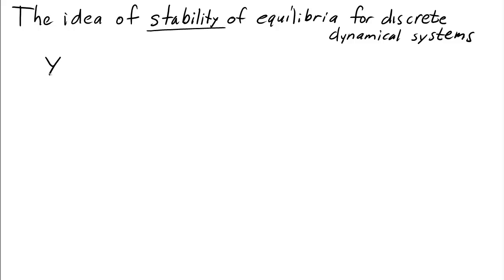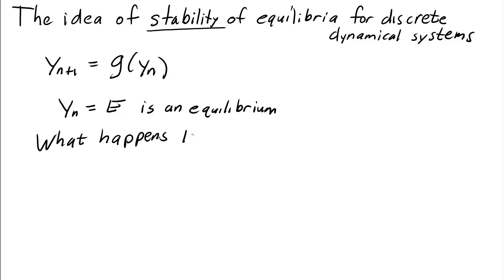If I have a dynamical system, yn+1 equals g of yn, and I tell you yn equals the number e is an equilibrium, then what happens if I set y naught, the initial condition, equal to the equilibrium?